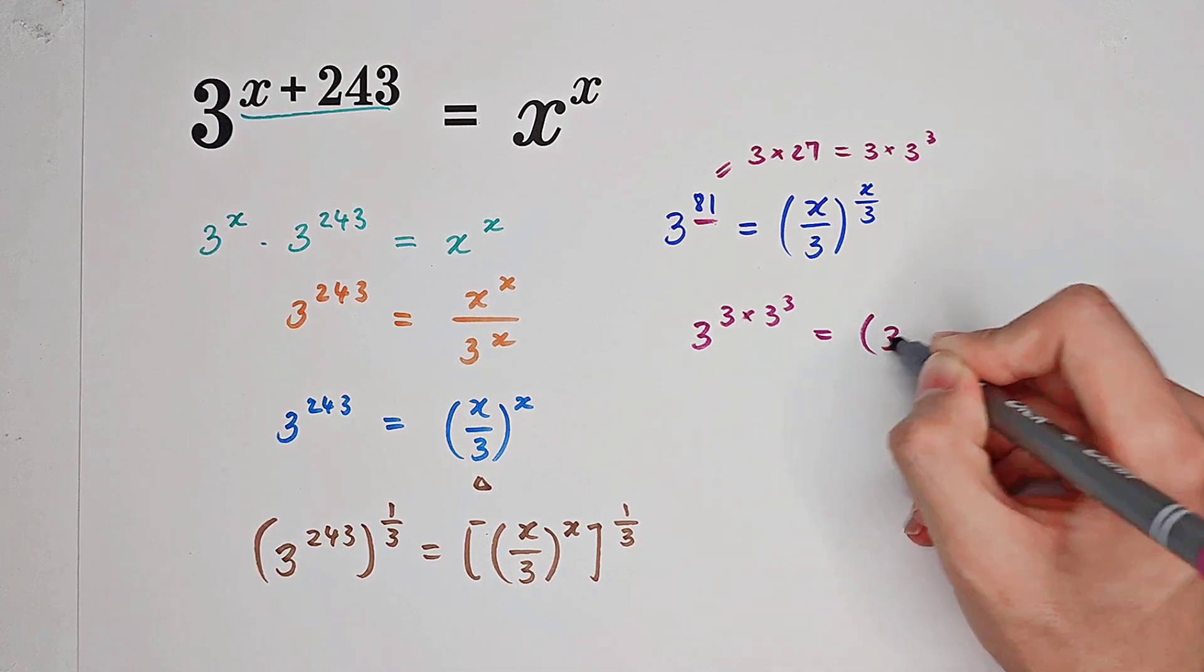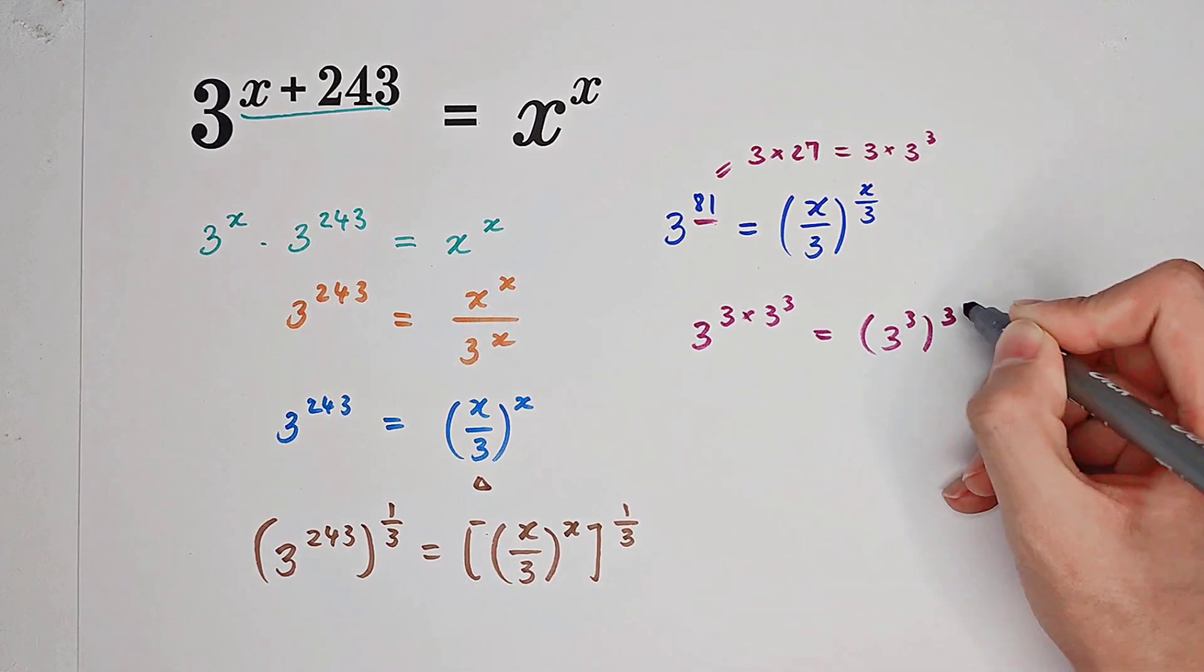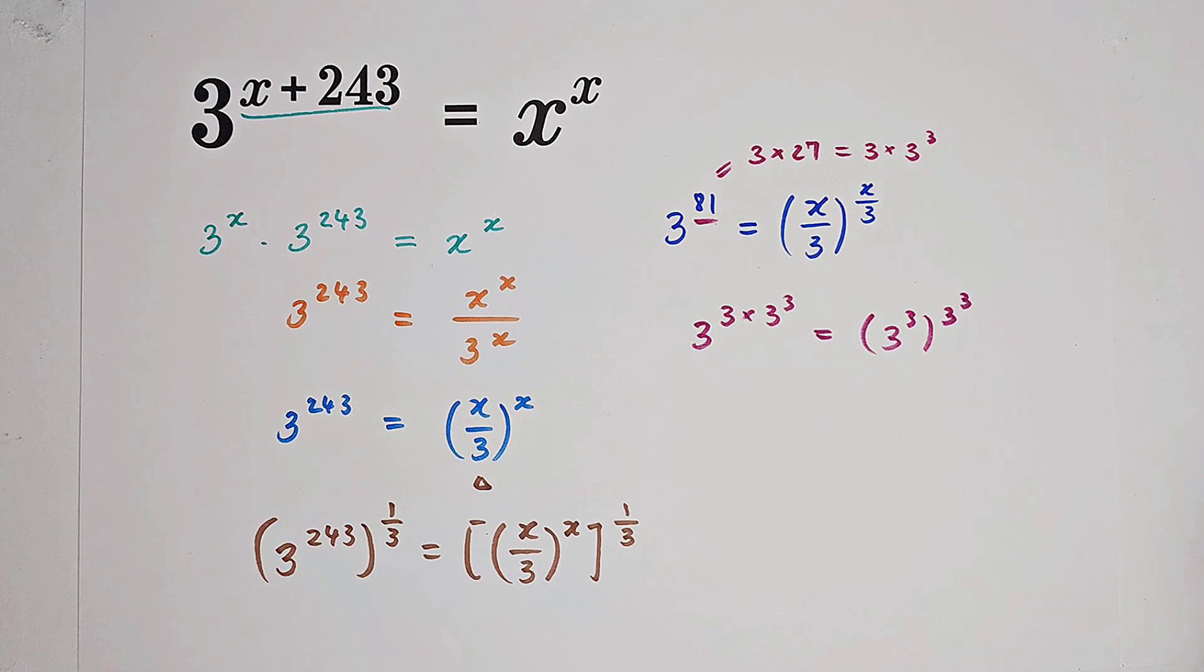And this is actually equal to 3 to the power of 3, all to the power of 3 to the power of 3, which equals 27 to the power of 27.